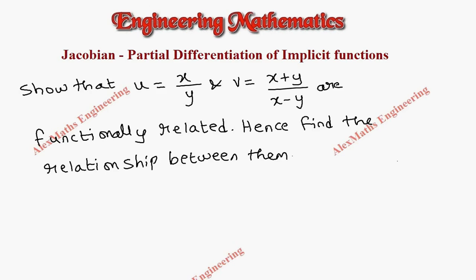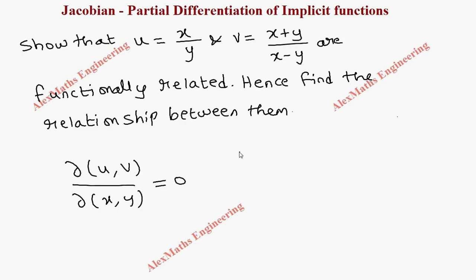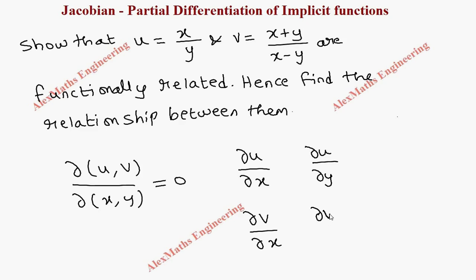Hi students, this is Alex here. In this video we are going to show that u and v are functionally related. The necessary condition for functionally related is that ∂(u,v)/∂(x,y) should be 0. So we are going to evaluate the determinant whose elements are ∂u/∂x and ∂v/∂x in the first column, then ∂u/∂y and ∂v/∂y in the second column.